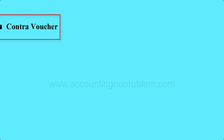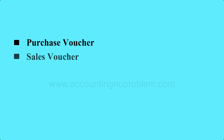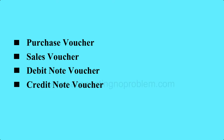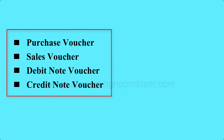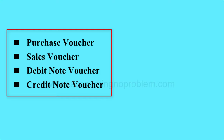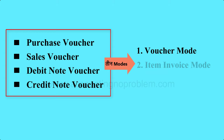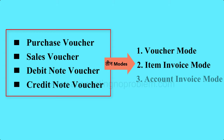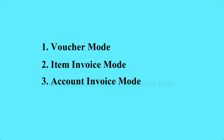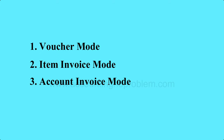अब हम जिन चार vouchers पर काम करने जा रहे हैं — purchase voucher, sales voucher, debit note voucher और credit note voucher — ये चारों मुख्यतः माल यानि goods से संबंधित हैं। Tally ने इन चारों vouchers में transactions record करने के लिए तीन modes दिये हैं: voucher mode, item invoice mode और account invoice mode। पहले हम इन तीनों को एक-एक करके समझते हैं।